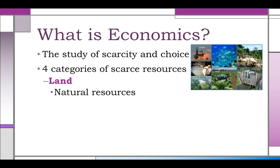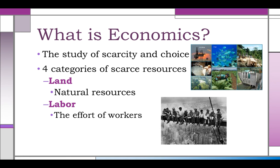There are four categories of scarce resources, also referred to as the factors of production. The first is land — anything that comes from the earth, what we'd call natural resources: coal, water, sunlight, things like that. The second category is labor, which is the effort of workers — the people that plow fields, enter data, teach kids, patrol our streets.